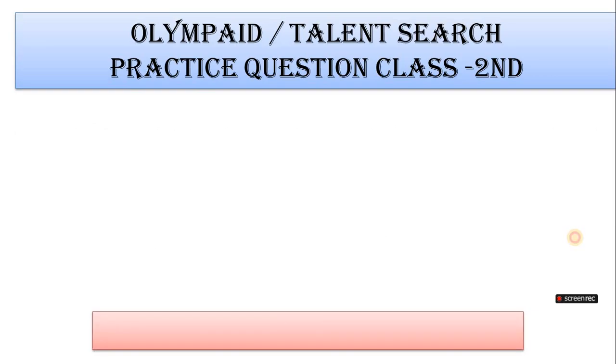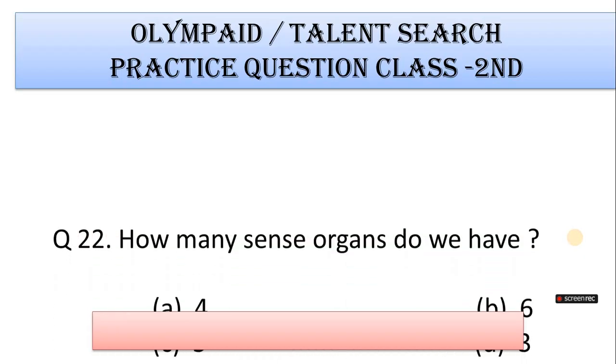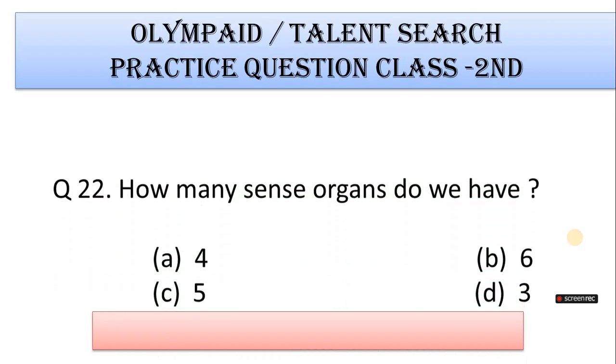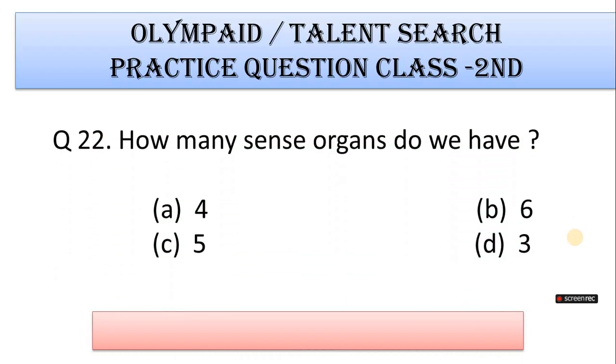Number 22: How many sense organs do we have? A. Four, B. Six, C. Five.